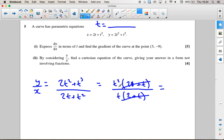So they'll cancel and I've got t squared over t which is just t. So y over x equals t.